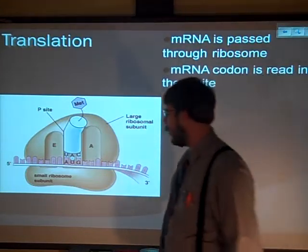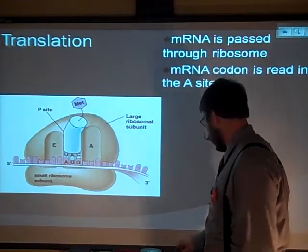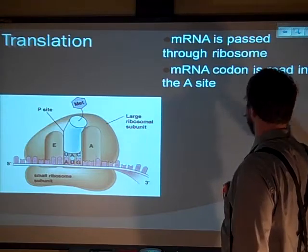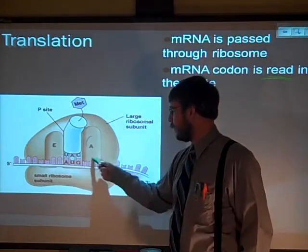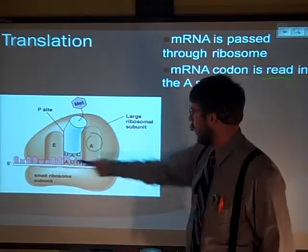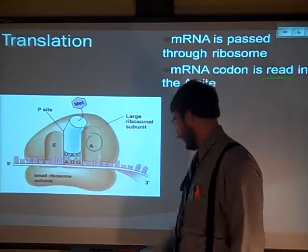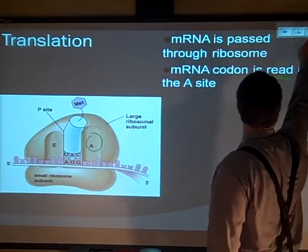As it passes through the ribosome, the code is read at the A site, right? So it's going through that way. It starts at the A site and gets read right there at the A site.